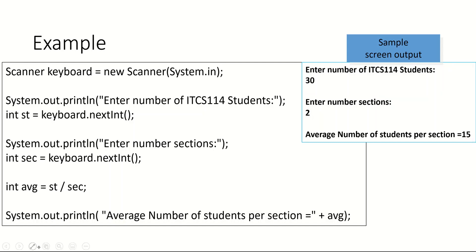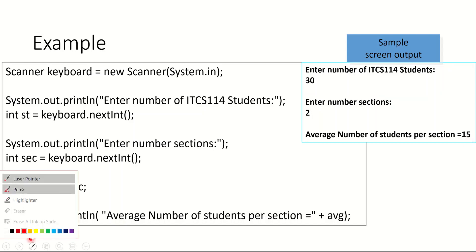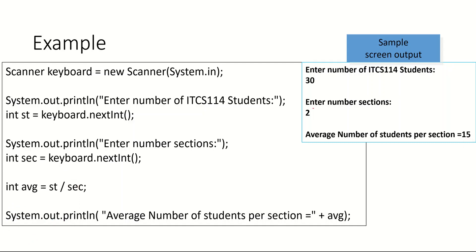Now assume that by mistake the user inputs the number of sections as 0. We will come across the statement where we calculate the average — student over number of section — and this will be divided by 0, which will cause your program to stop running and you will not have any output. So we need to handle this error, and there are many ways; we will do one of them using exception.